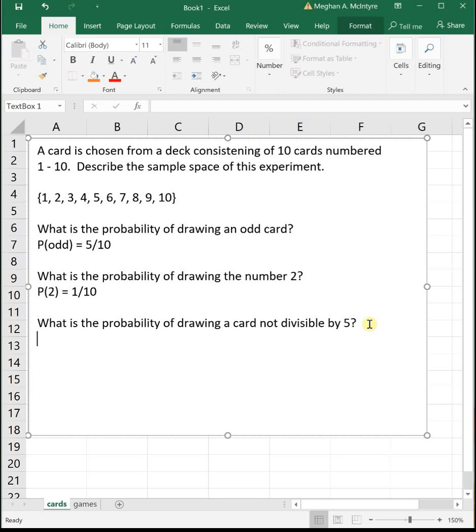And what is the probability of drawing a card that is not divisible by 5? So often if you see the words at least, at most, or not show up, generally it's easier to use the complement rule than to do the problem directly. So we see this word not showing up. Let's try to do this one using the complement rule.